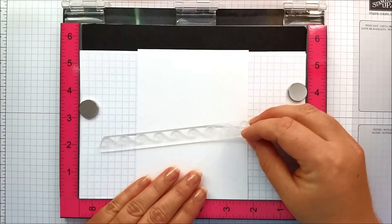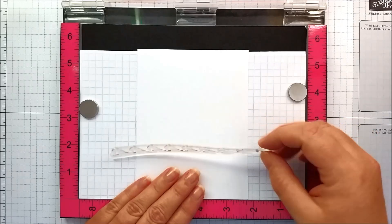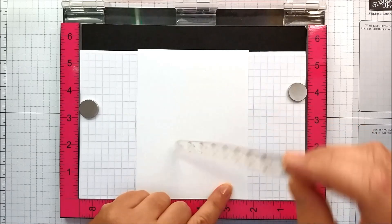In our stamp set we have a wave that looks like it's been fabric stamped and that's what we're going to play with first.